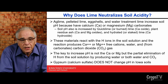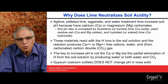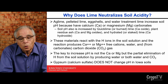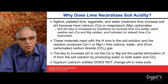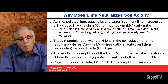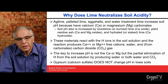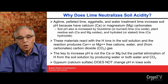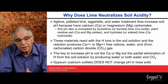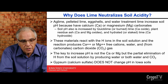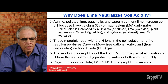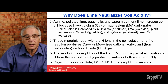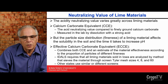These materials react with the hydrogen — with the acidity in the soil solution — and the reaction produces free calcium or magnesium cations, water, and when the soils have carbonates, carbon dioxide gas. The key to increase pH is not the calcium or the magnesium, but the partial elimination of hydrogen from the soil solution by producing water or both water and CO2. These reactions do not happen with gypsum or calcium chloride — neither changes pH.